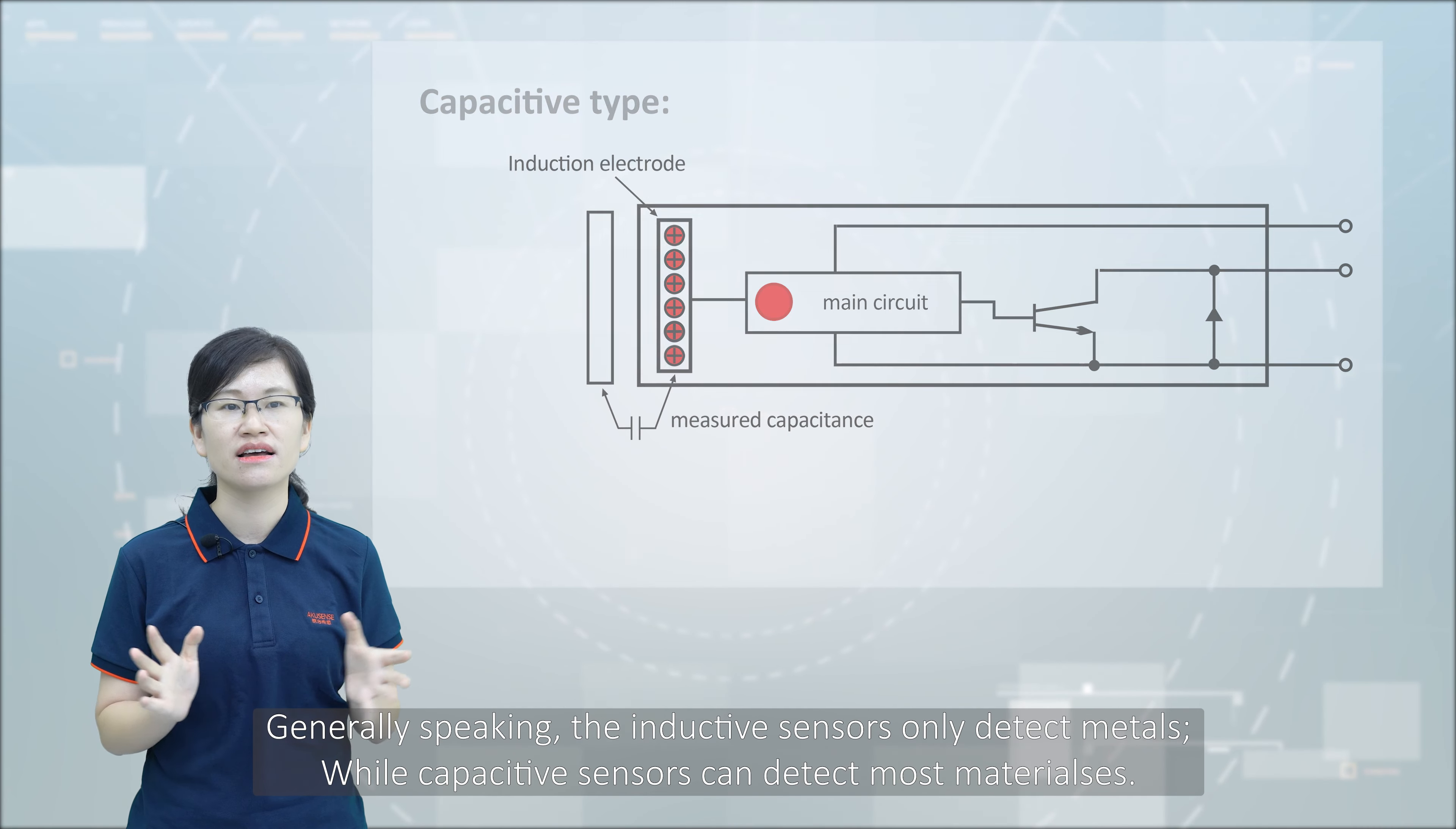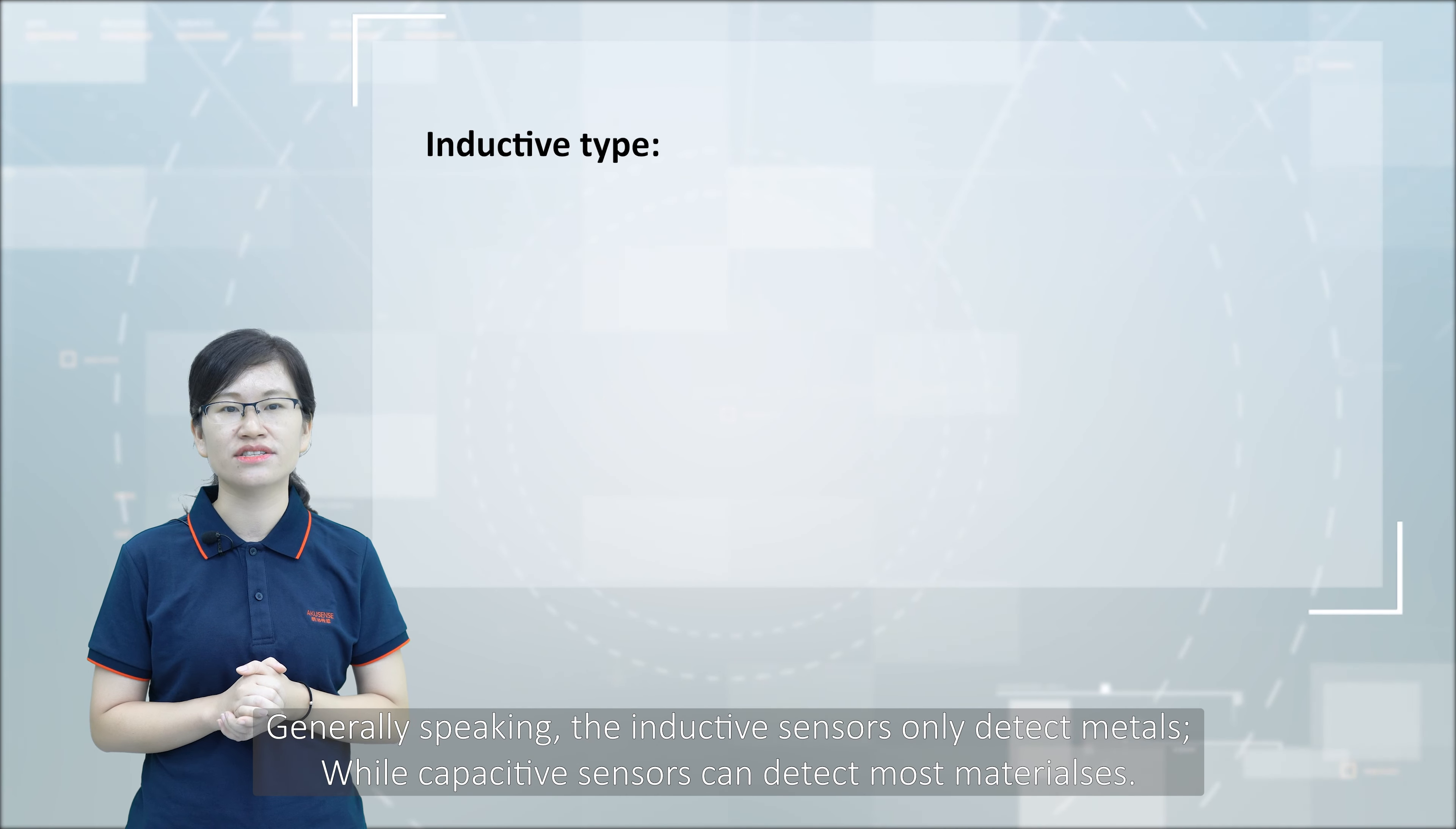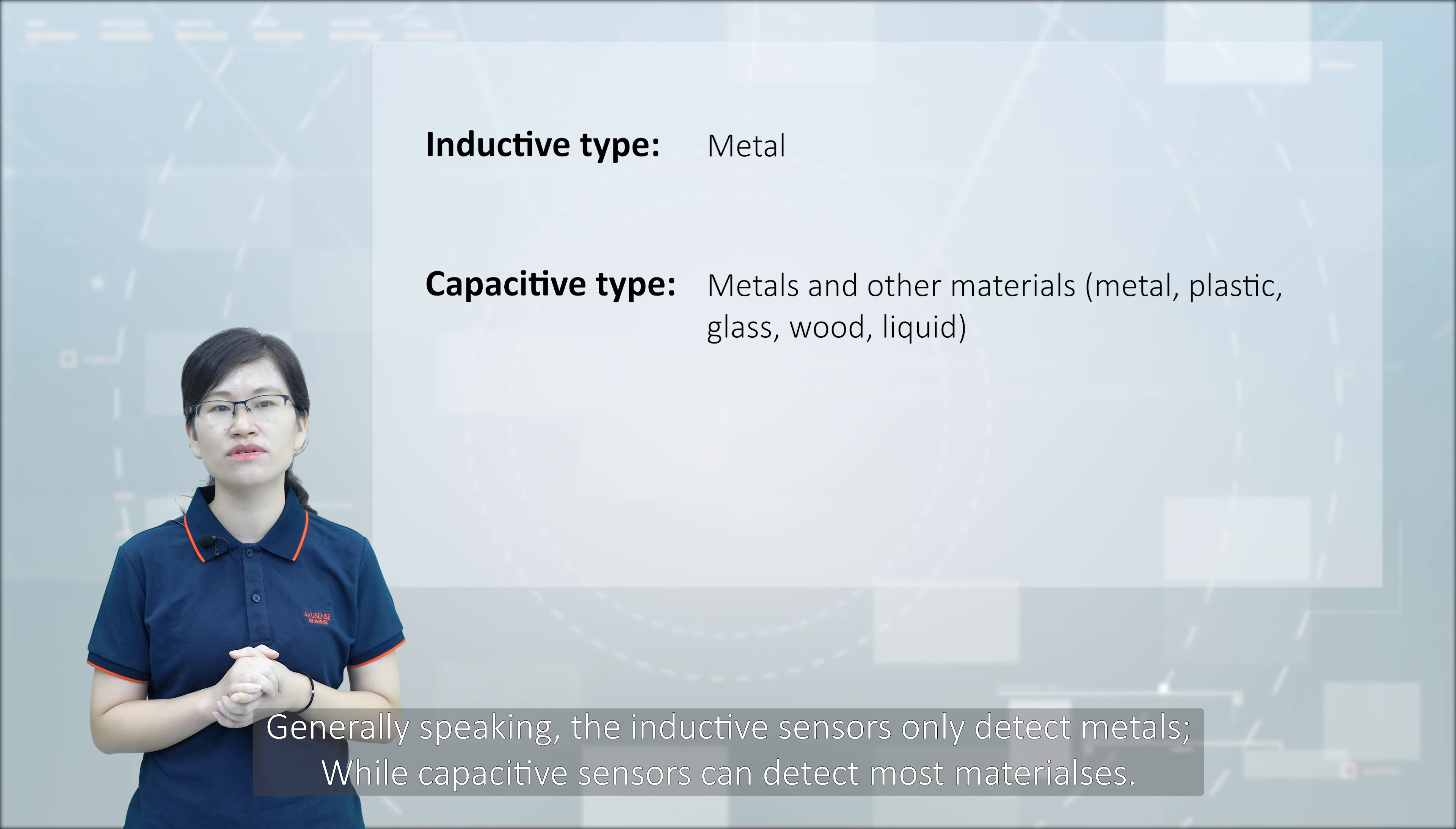Generally speaking, the inductive sensors only detect metals, where capacitive sensors can detect most materials.